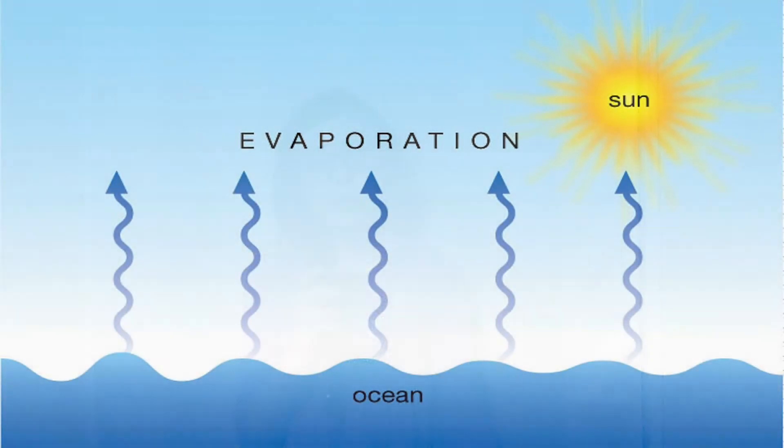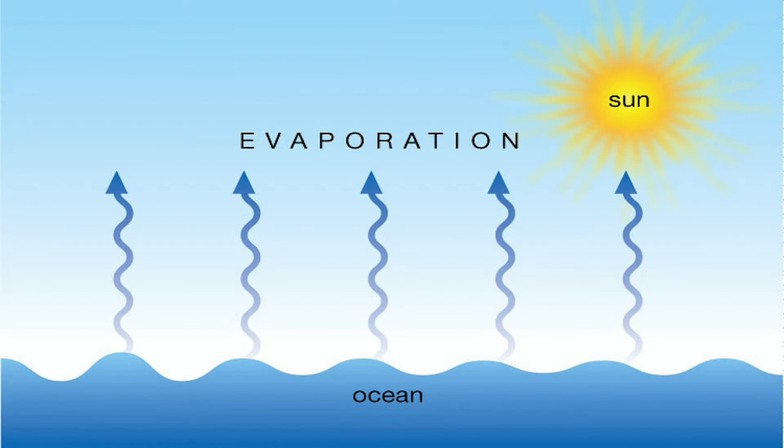Welcome back live to Fox News. Today we will be discussing the water cycle. In my opinion, evaporation is the first part of the water cycle. Evaporation is when the water is heated by the Sun and turns into water vapor and goes up into the sky.